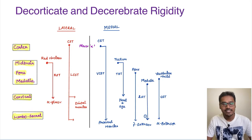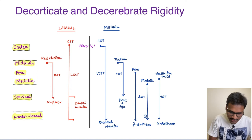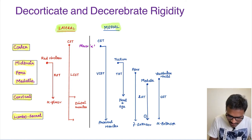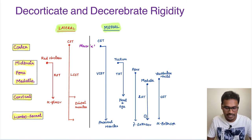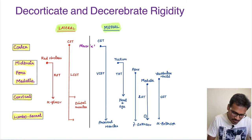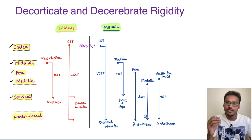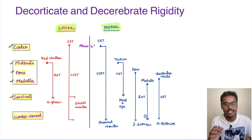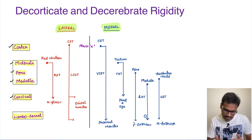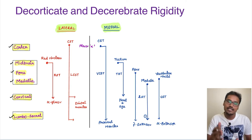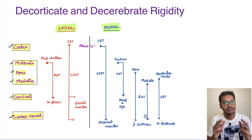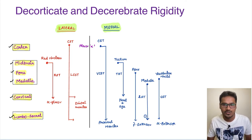Coming to these pathways, we have already discussed them in our descending tracts, but let us revise them. The descending tracts are classified into lateral tracts and medial tracts. The red ones are the lateral tracts and the blue ones are the medial tracts. Here I have described the cortex, midbrain, pons, medulla, and cervical — meaning if I stop a tract at the cervical region, it is giving fibers to the upper limb only. If any tract comes all the way to the lumbosacral, it is giving branches to both the upper and lower limb.